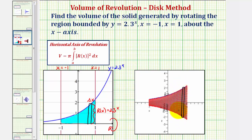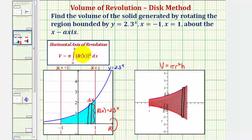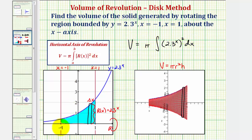Remember, if we were trying to find the volume of a right circular cylinder, we would use the formula V equals pi r squared times h. Looking at the volume formula, we can see this in our integral: the volume equals pi times the integral of R of x squared, integrated with respect to x from a to b. Here's the pi, R of x squared is the radius squared, and dx represents the height of the right circular cylinder. So the volume is equal to pi times the integral of r of x squared, which would be 2.3 raised to the power of x, squared, integrated with respect to x from negative one to one.